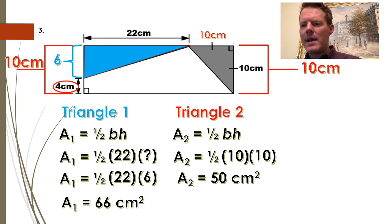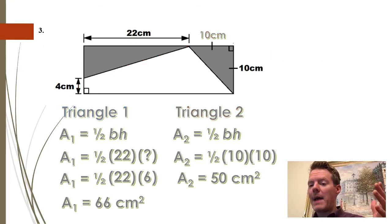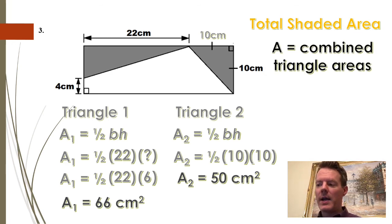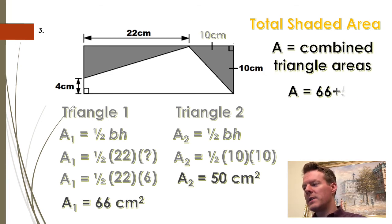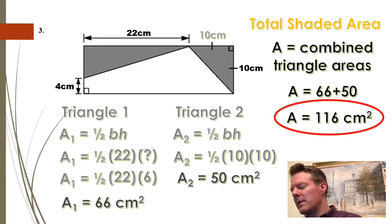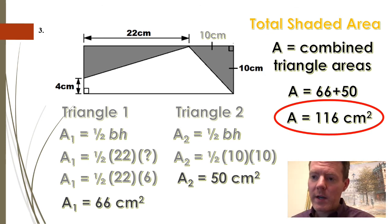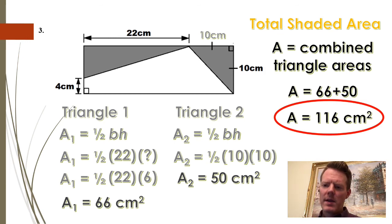I'm not done yet — I have to do the final step of adding those two things together. The total shaded area will be the two combined triangle areas. So 66 plus 50 equals 116 square centimeters. Make sure you have the units labeled. That's your quick crash course review on how to find the area of complex figures. Good luck!